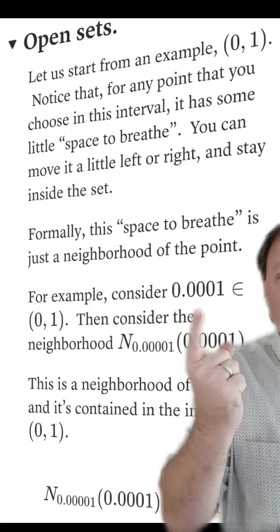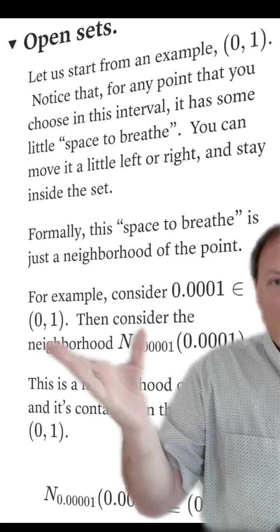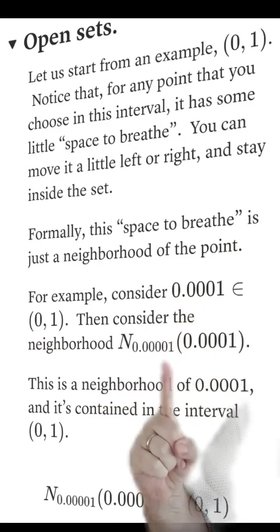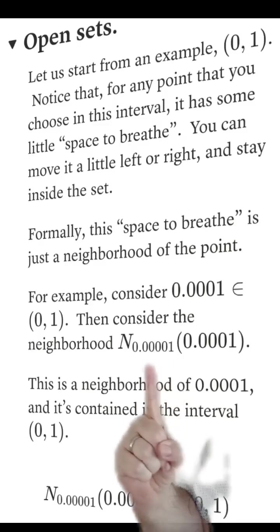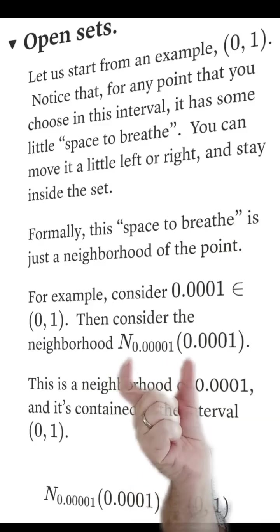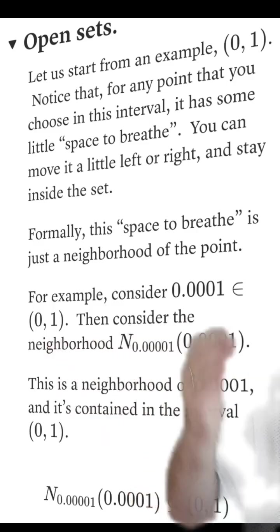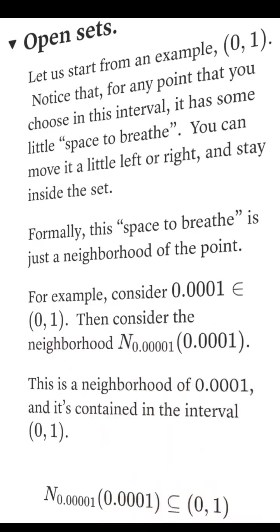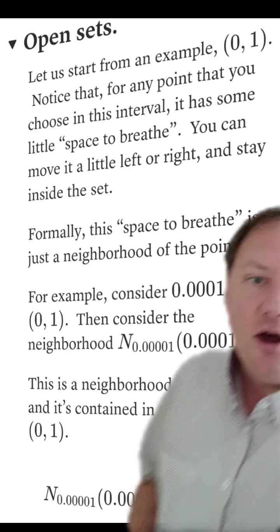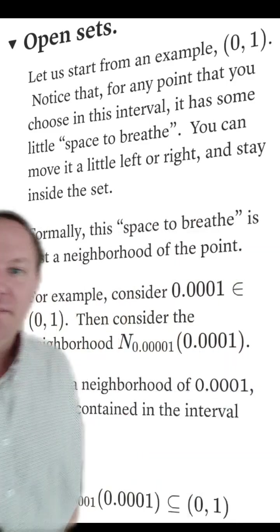Consider, for example, the point 0.0001, and that's in our interval, and if we take a neighborhood with a really tiny radius, right, this is the radius of our neighborhood, it's centered at this point, this neighborhood is in fact going to be a subset of the interval from 0 to 1.